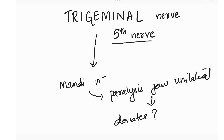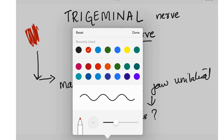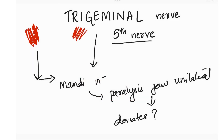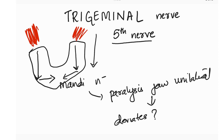For the lateral pterygoid muscles — along with some muscles in the upper neck — they open the jaw in a specific direction: downward and inward. So with one lateral pterygoid on each side both pulling downward and inward, they open the jaws. If one side's mandibular nerve is affected peripherally, there's paralysis of the jaw on one side, and we need to know: does the jaw deviate toward the weak affected side or the opposite side?